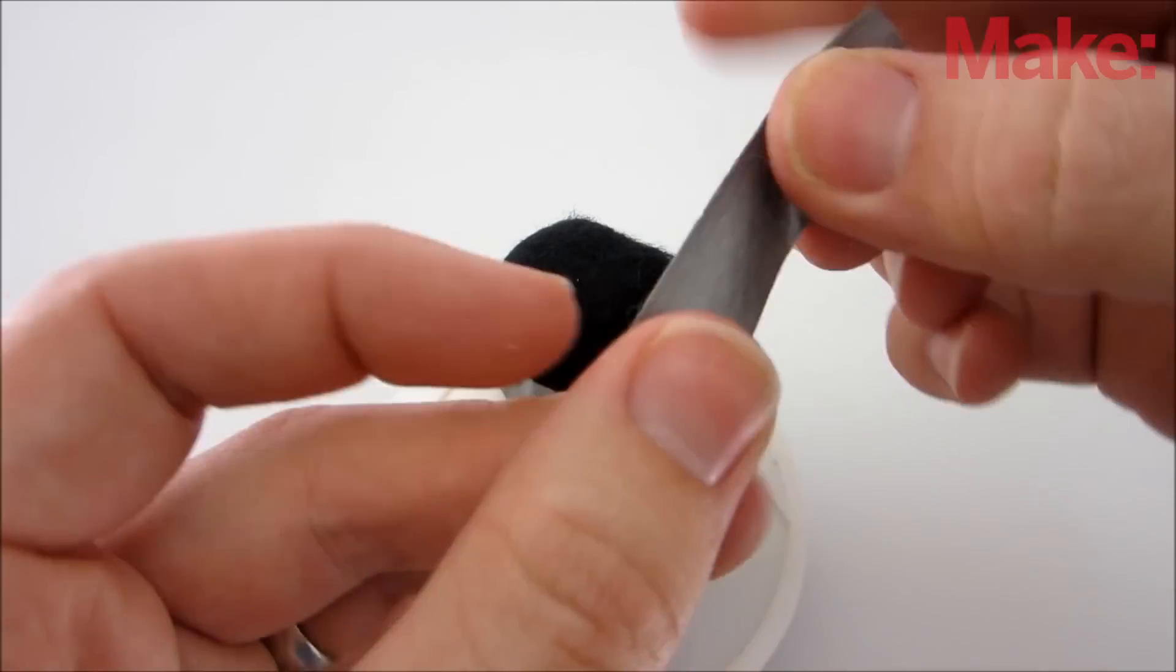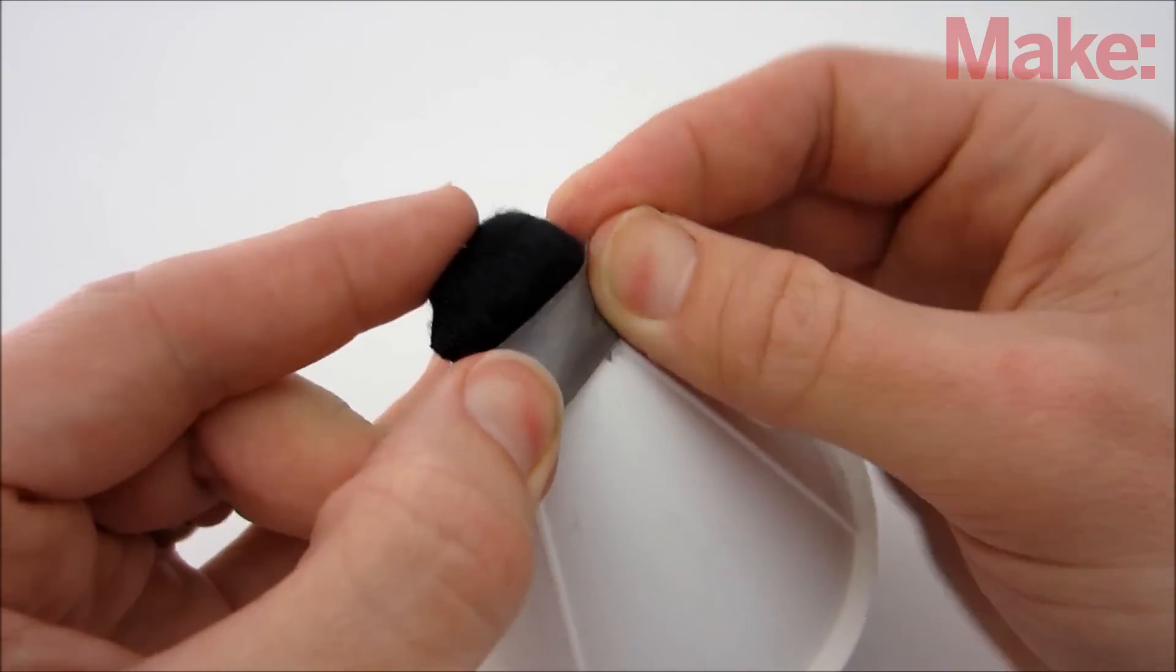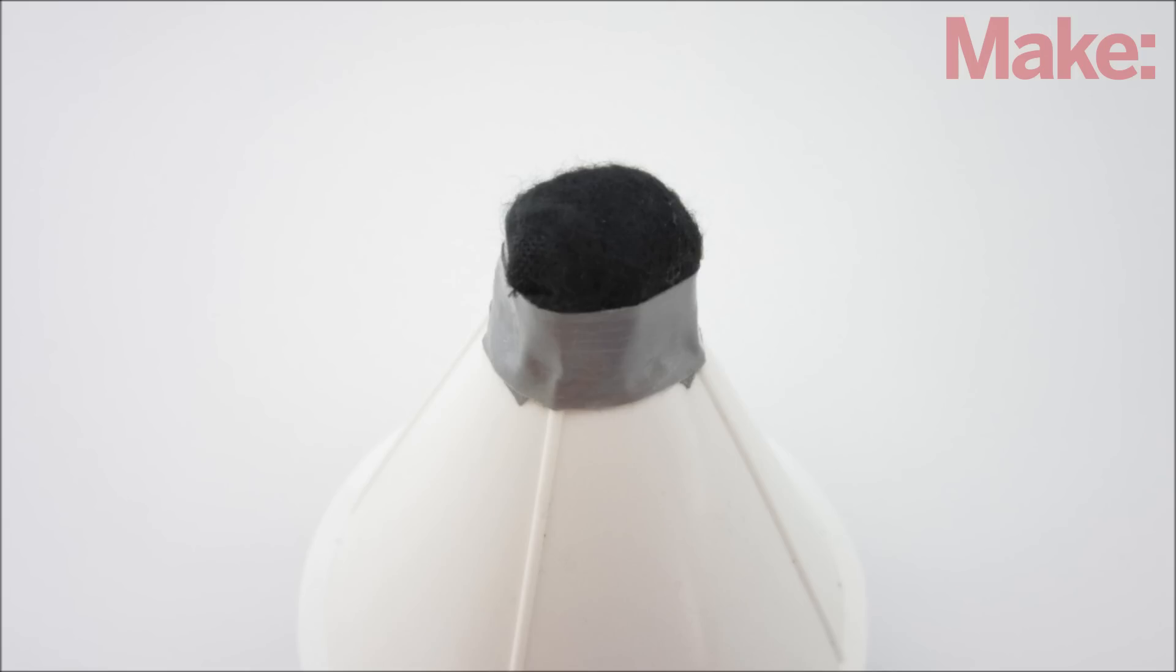Next, apply a thin piece of fabric over the end and tape that in place. This will help to keep the grounds inside the balloon.